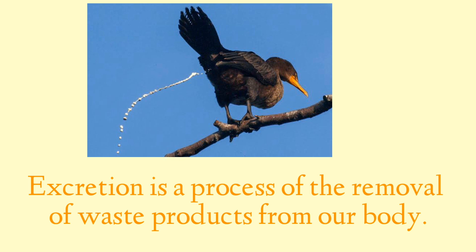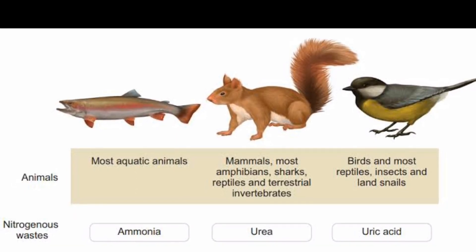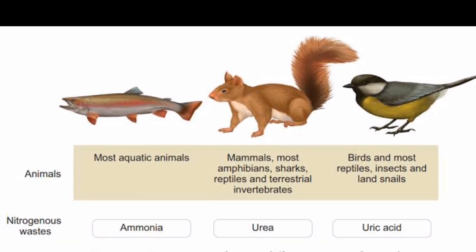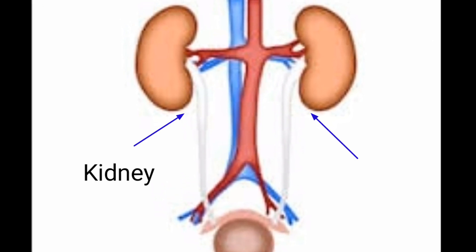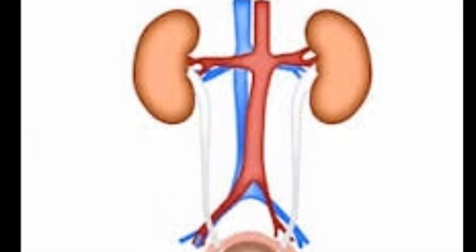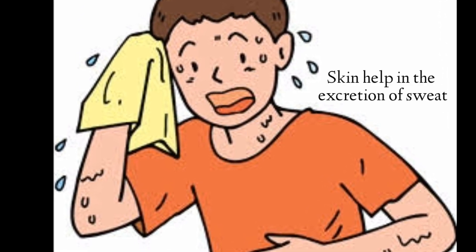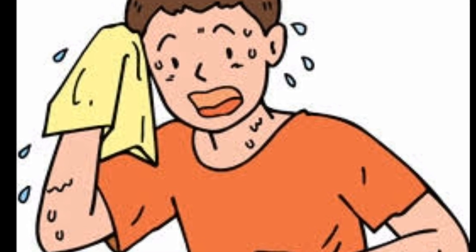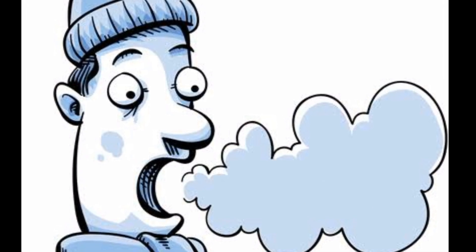The sixth characteristic of leaving things is that they excrete. Excretion is the process of removal of waste products from the body to continue normal life processes. Different animals excrete with specialized organs. In humans, the main excretory organ is the kidney, where urine is formed. The skin helps in excretion of water, salt, and urea in the form of sweat. Lungs help to get rid of carbon dioxide through respiration.